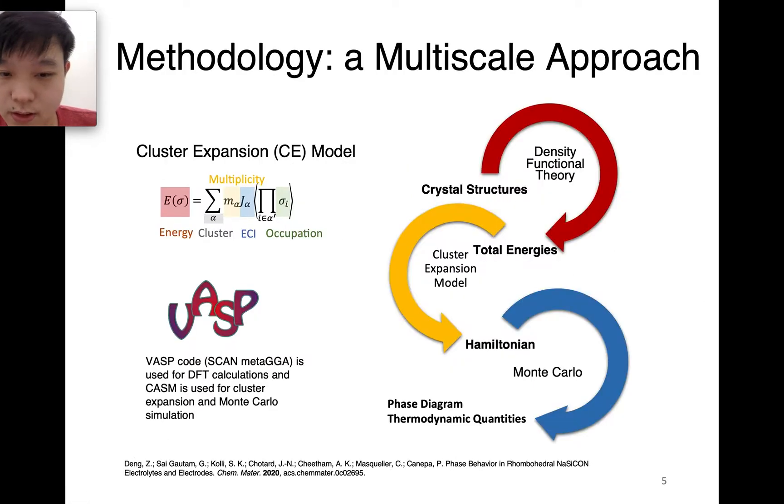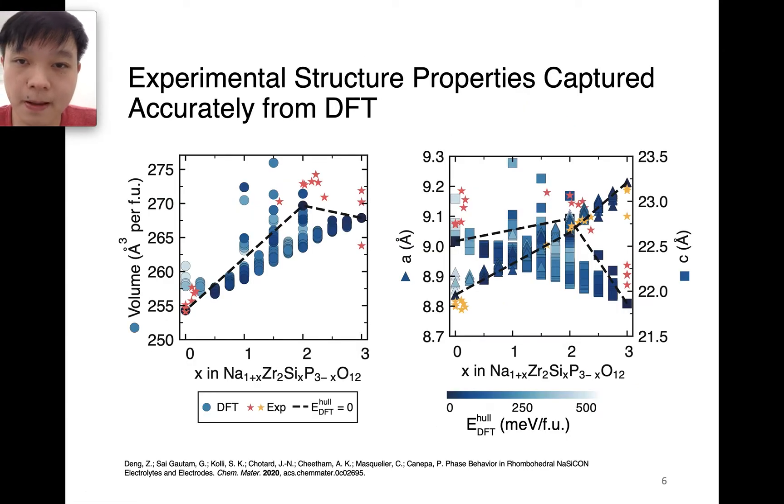Here we use a multi-scale approach. We start from the crystal structure, then enumerate all possible structures at different compositions, and pass them into a density functional theory calculation to calculate the total energy. For DFT, we use VASP code. After we get the total energies, we fit a so-called cluster expansion model so that you can express the total energy as a function of small clusters. Here we use CASM code, which is developed by Professor Van der Ven from UC Santa Barbara. After that, we can get a Hamiltonian, and by using this Hamiltonian we can run Monte Carlo and get all the phase behavior and phase diagrams for these materials.